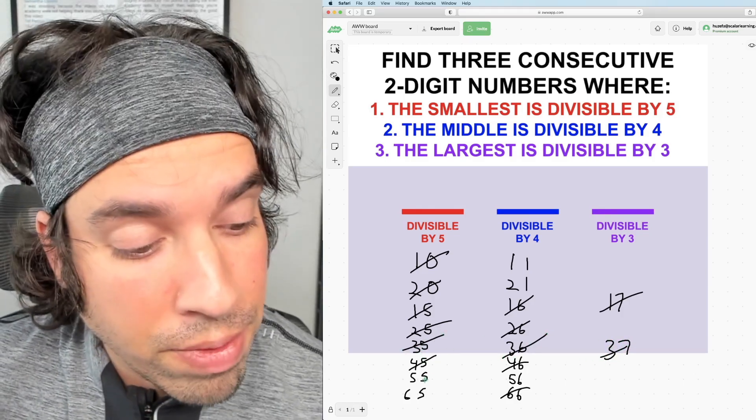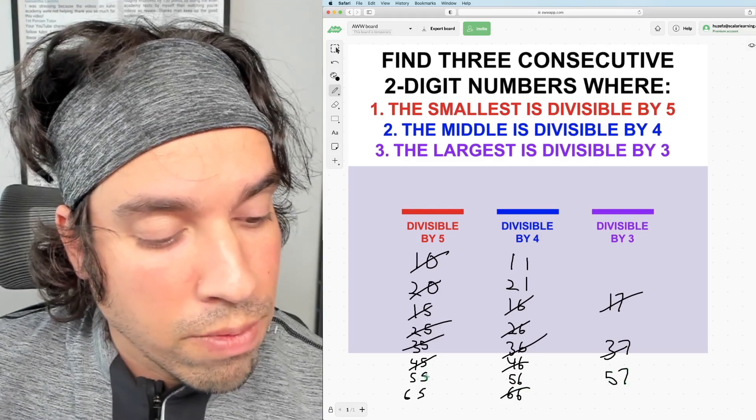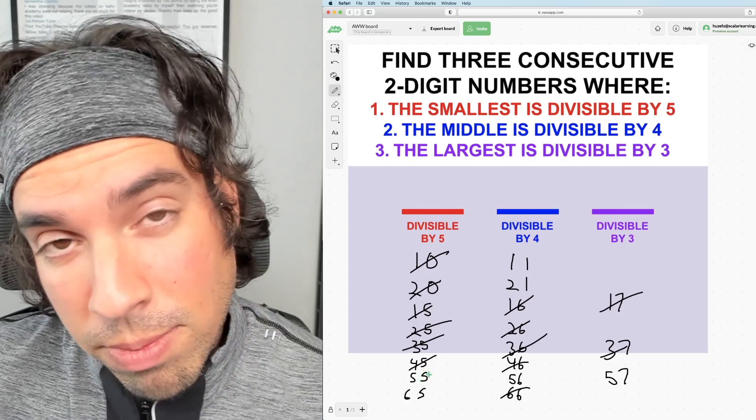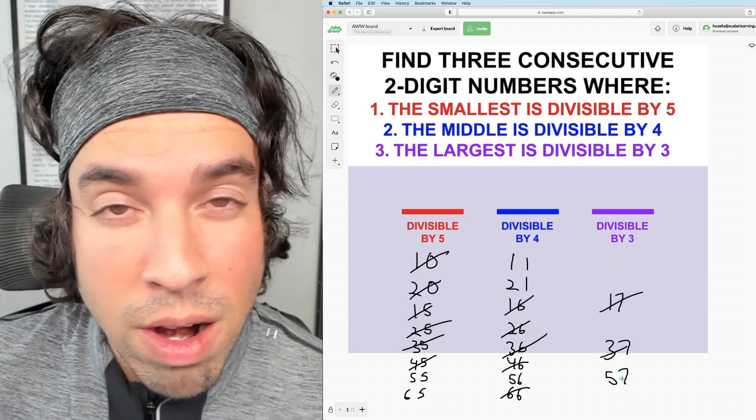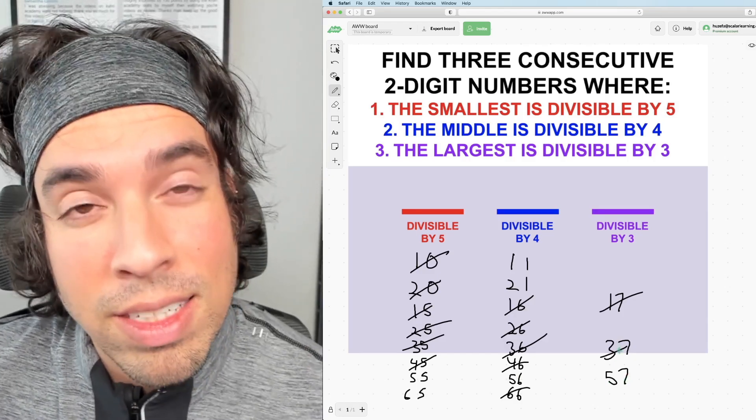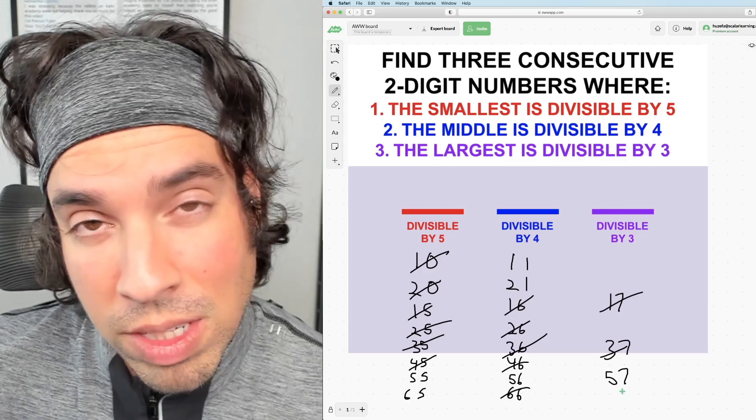Next we've got 55, 56. The next one would be 57. So 55 is divisible by five, five times 11. 56, four times 14 gives me that. Is 57 prime or is it divisible by three? It is in fact divisible by three. Three times 19 gives me 57.